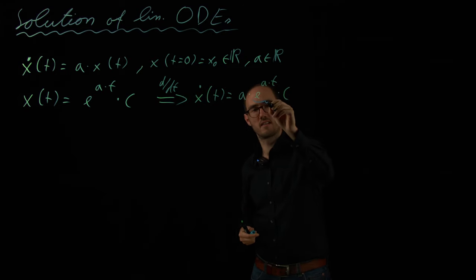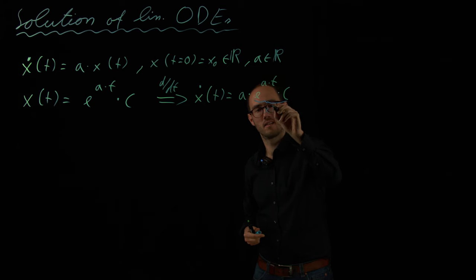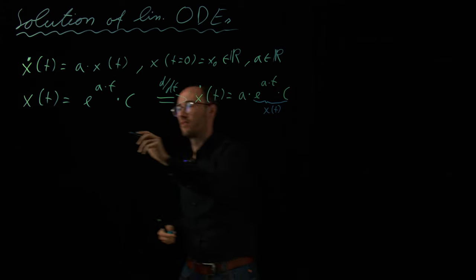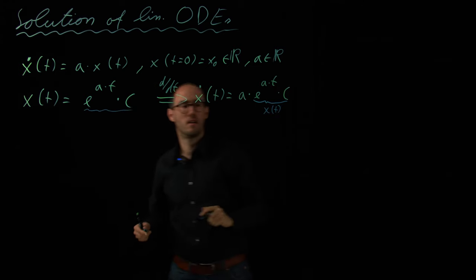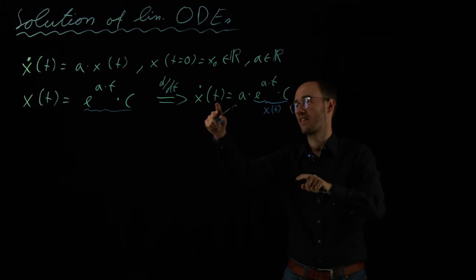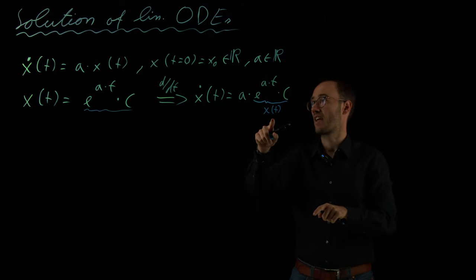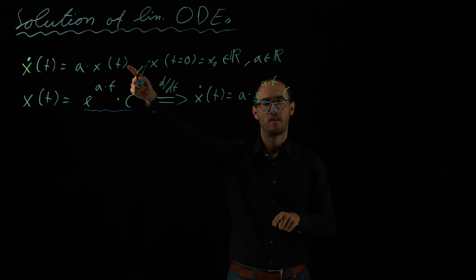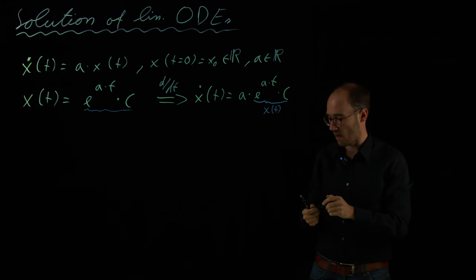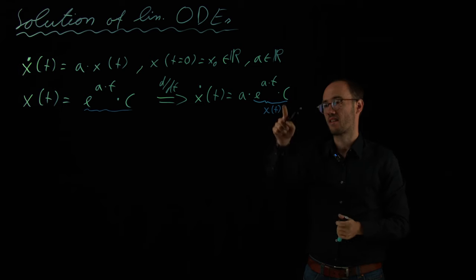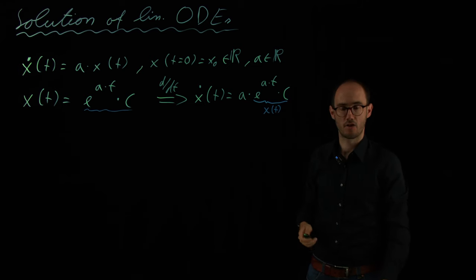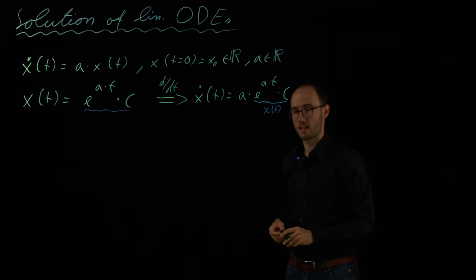And if we have a closer look, of course, that here is our ansatz equation again, x of t. So, this is this one here. So, what we actually have is x dot is equal to A times x of t, which is our ODE model. So, we have therefore shown that this ansatz equation here is actually a solution of our linear scalar ODE.